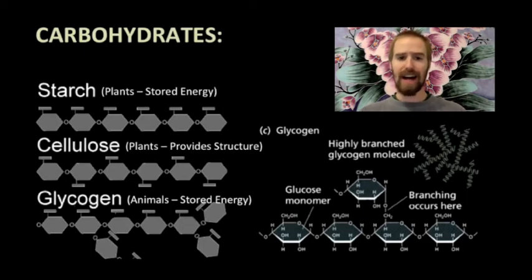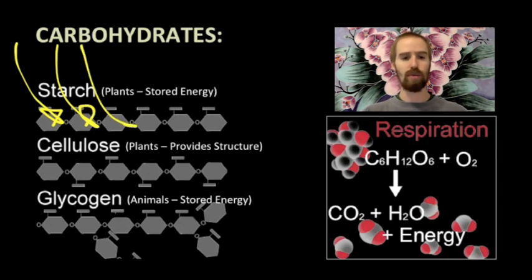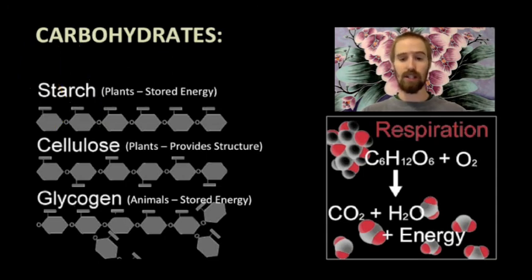But how do carbohydrates provide us with energy? Remember when I said that plants use the sun's energy to manufacture carbohydrates from carbon dioxide and water? Well, when a plant engages in this process, it is as though it is packaging the sun's energy into this glucose molecule that it produces. Living organisms, both plants and animals, use a process called cellular respiration to release this energy.